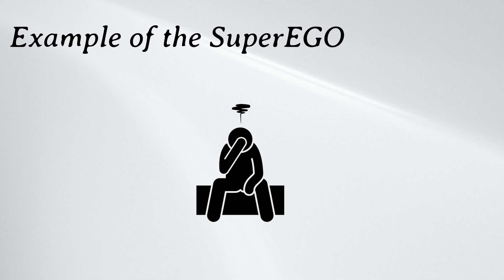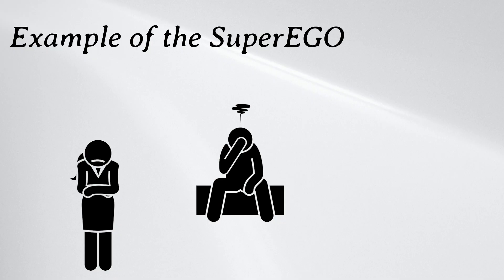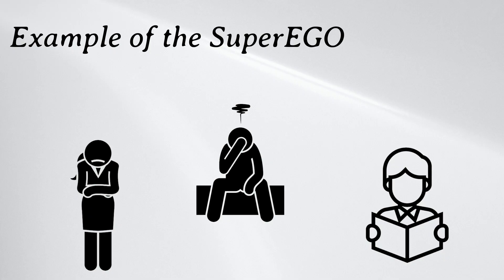Other examples of the superego include: A woman feels an urge to steal office supplies from work; however, her superego counteracts this urge by focusing on the fact that such behaviors are wrong. A man realizes that the cashier at the store forgot to charge him for one of the items in his cart. He returns to the store to pay for the item because his internalized sense of right and wrong urges him to do so. A student forgets to study for a history test and feels an urge to cheat off a student sitting nearby. Even though he feels the chances of getting caught are low, he knows that cheating is wrong, so he suppresses the urge.